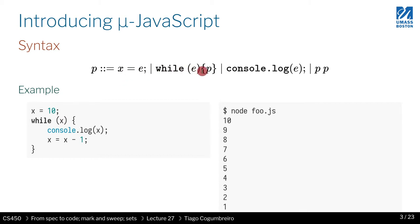Usually we use instructions when they don't return a value, and in this language nothing is being returned. The only way to observe a value is by doing a print.